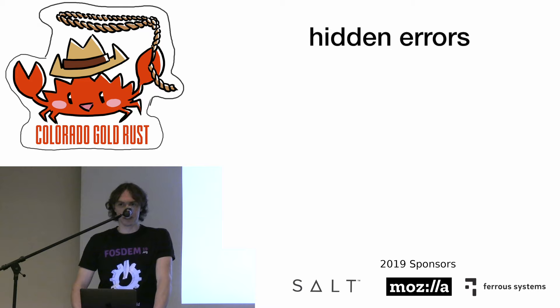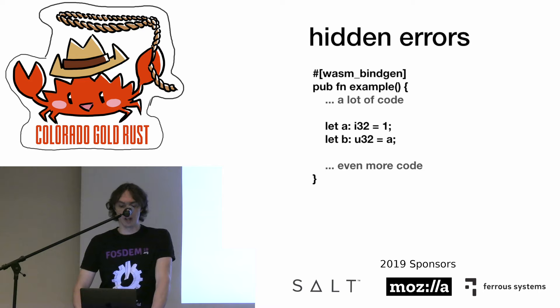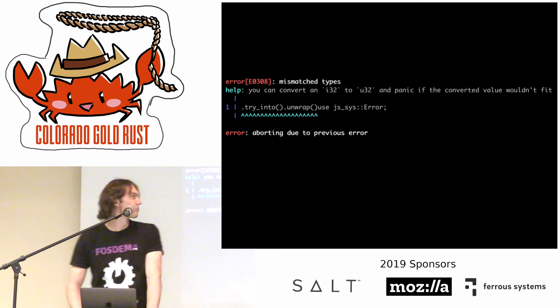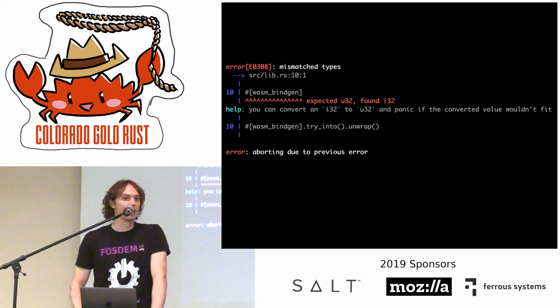In general, in Rust there's a hidden sort of problem which sometimes happens with closures — not only with wasm-bindgen, I've seen it elsewhere too. Let's check this example. We have a function, and here we try to assign a value. Usually Rust errors are very nice and descriptive, but look at this one — there's no line number or file name. It's quite a rare case, but sometimes it happens.